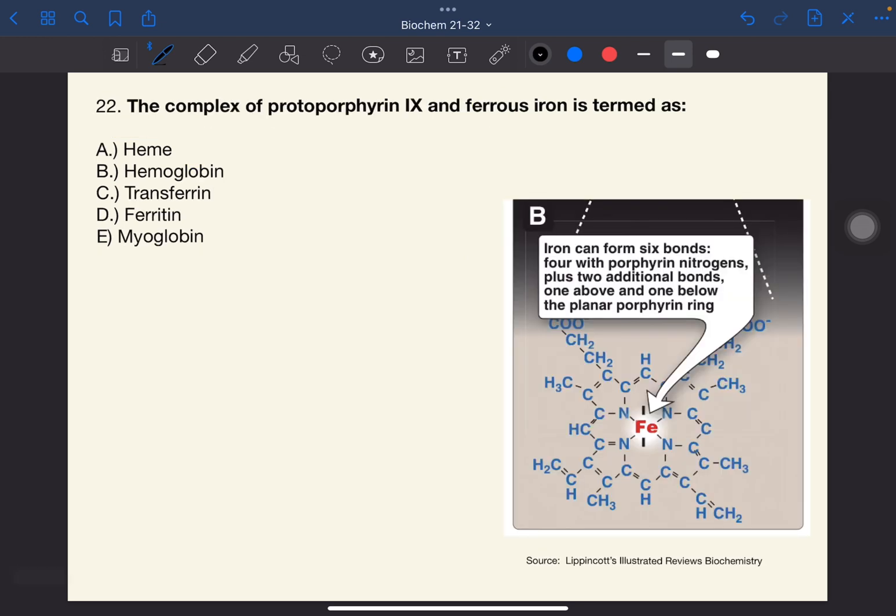Number 22. The complex protoporphyrin-9 and ferrous iron is termed as... The answer to this one is A, heme. So heme is a complex of protoporphyrin-9 and ferrous iron, Fe2+.